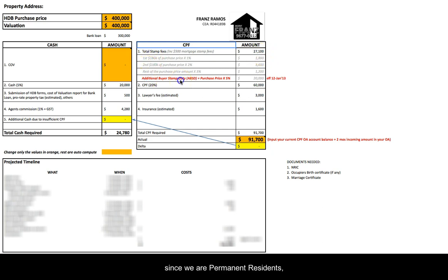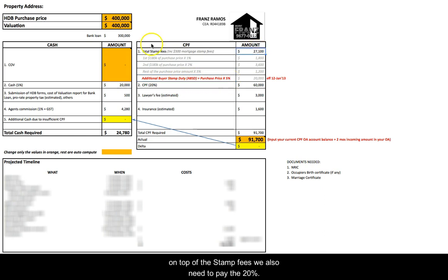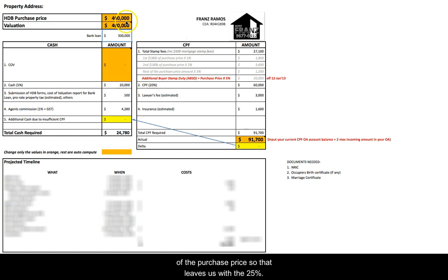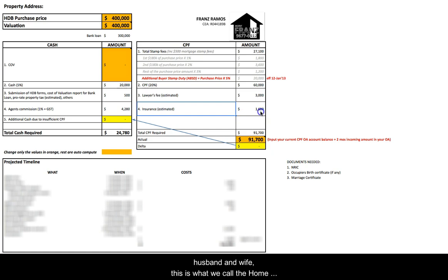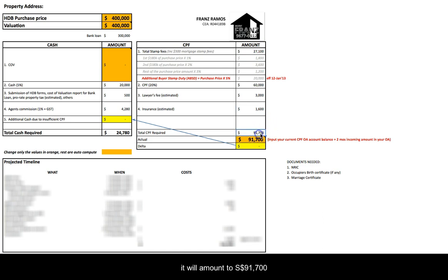I'd like to highlight that since we are permanent residents, we need to pay an Additional Buyer Stamp Duty of 5% of the total purchase price. On top of the stamp fees, we also need to pay the 20% downpayment. The bank pays 75% of the purchase price, leaving us with 25% — 5% in cash and 20% from CPF. Item 3 is the lawyer's fee, estimated at roughly $3,000. Item 4 is insurance, estimated at $1,600 assuming the buyers are husband and wife — this is the Home Protection Scheme. Adding all four items together comes to $91,700.